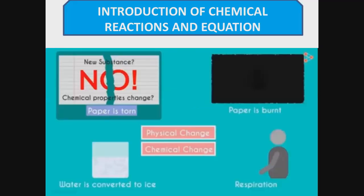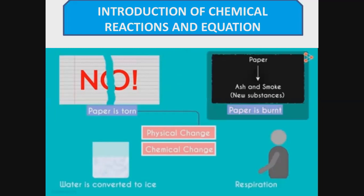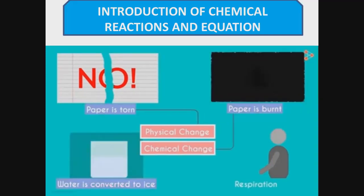Let's take a few examples. First, when paper is torn — do you see any new substances formed or any chemical properties changed? No. Simply, paper is torn into two pieces, changing physically. So it's a physical change. Our next example is when paper is burnt. When paper is burned, it is converted into ash and smoke. New substances are formed, so it is considered a chemical change.